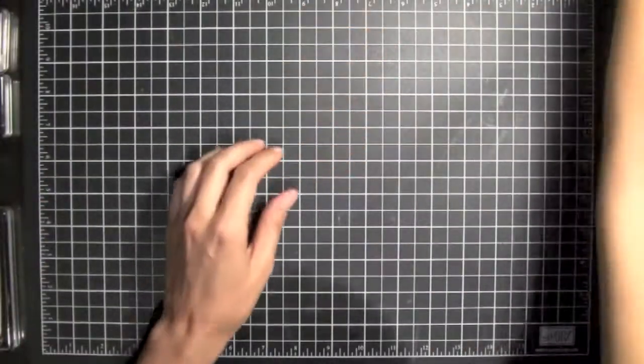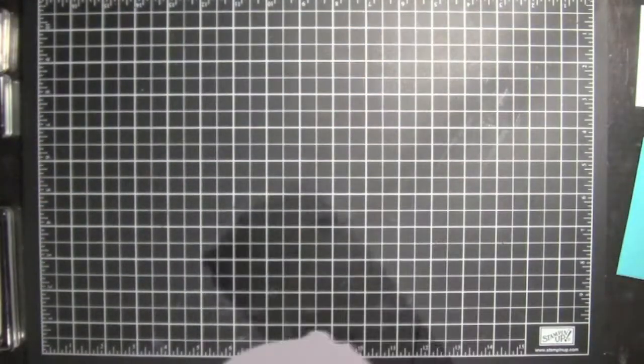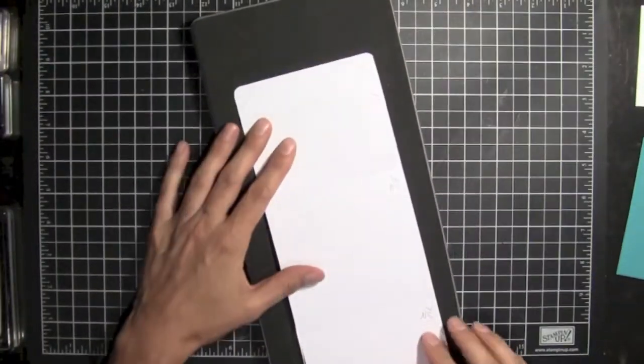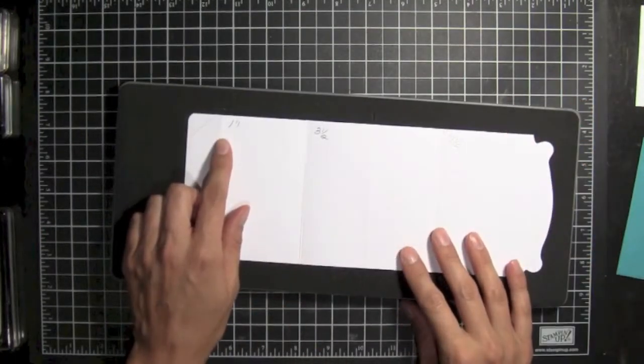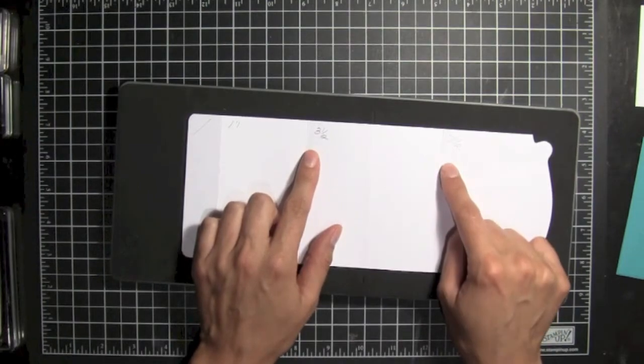So I started with the Pop'n'Cuts die. And I just cut out a piece right here. And I've scored it at 1 inch, 3 1⁄2, and 7 1⁄2.